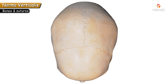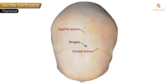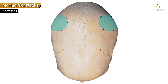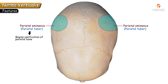Bregma is the meeting point of the coronal suture with the sagittal suture. The highest point on the sagittal suture, where the height of an individual is measured, is known as the vertex. The maximum convexity of the parietal bones on either side are termed parietal eminences — ossification of the parietal bone begins from this point.